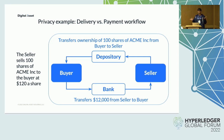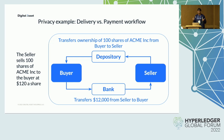Consider a very simple financial transaction where a seller sells to the buyer 100 shares of Acme Inc. The settlement of this transaction requires the transfer of ownership of stocks from the seller to the buyer and the cash transfer from the buyer to the seller. Apart from the buyer and seller, other parties involved in the settlement are, at a minimum, the securities depository and the bank.